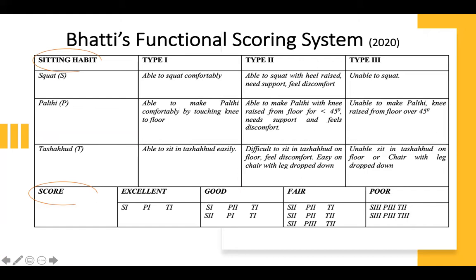Similarly, type 1 palti is when they are able to do a palti comfortably. In type 2 palti, they are able to make palti but the knees are raised from the floor less than 45 degrees. If the knees are raised more than 45 degrees, this falls into type 3 palti. Type 2 tashud is if there is difficulty sitting on the floor with discomfort, and it is better for the patient to sit on a chair with the leg dropped down. If they are completely unable to perform this, then it is type 3.